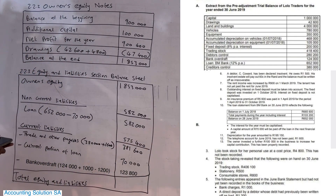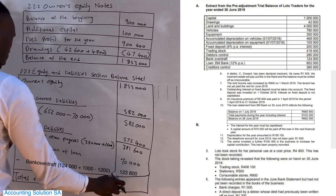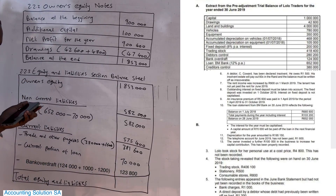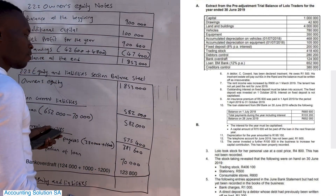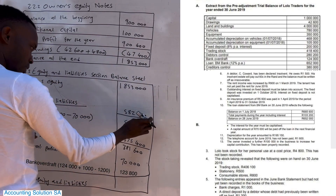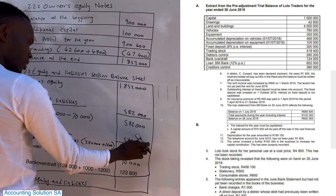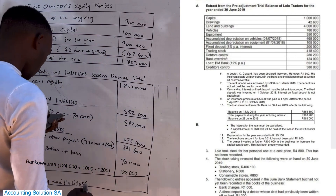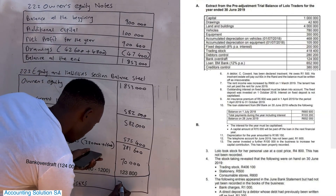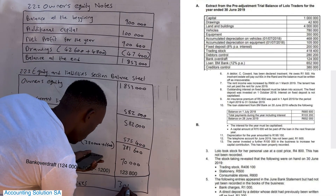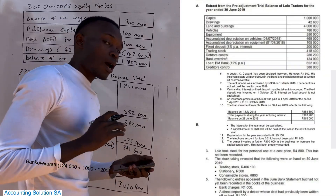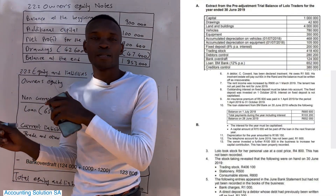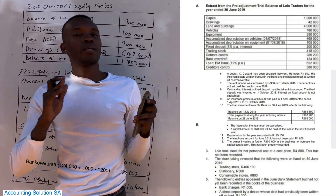After that we can calculate total equity and liability by adding everything together — owner's equity plus non-current liability plus trade and other payables — giving us a total of 3,010,400. That is how we prepare this part.